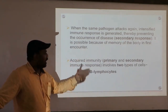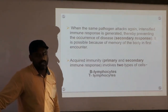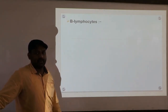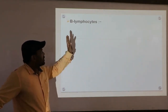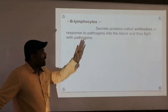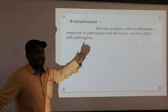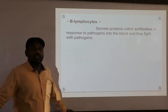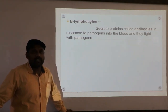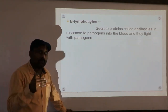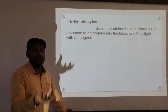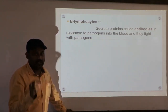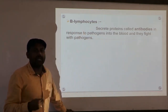Acquired immunity, which includes both primary and secondary immune responses, is mediated by two important types of cells: B-lymphocytes and T-lymphocytes. B-lymphocytes are a generation of WBCs that secrete proteins called antibodies in response to a pathogen, releasing them into the blood to fight the pathogens. These antibodies are normally not present in the body — they are produced by B-lymphocytes only when a pathogen enters the body.